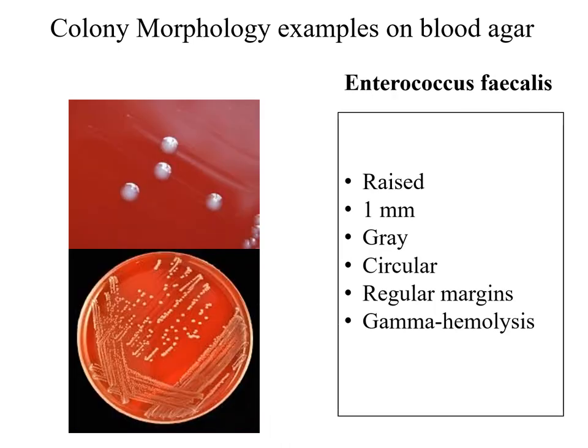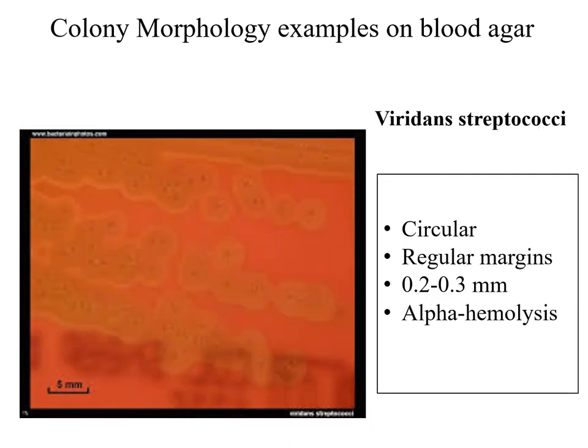Enterococcus faecalis: the colonies are raised, 1 mm in diameter, gray in color, circular, with regular margins. They do not exhibit any hemolysis pattern, so they are classified as gamma hemolysis.